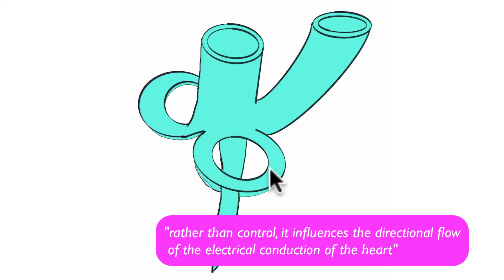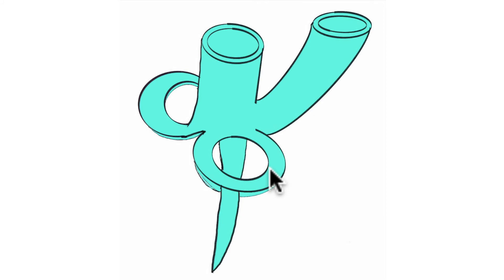So blood flows from the right atrium to the right ventricle, out the pulmonary artery, back to the left atrium and into the left ventricle and then out the aorta. So the fibrous skeleton is controlling the directional electrical activity of the heart.